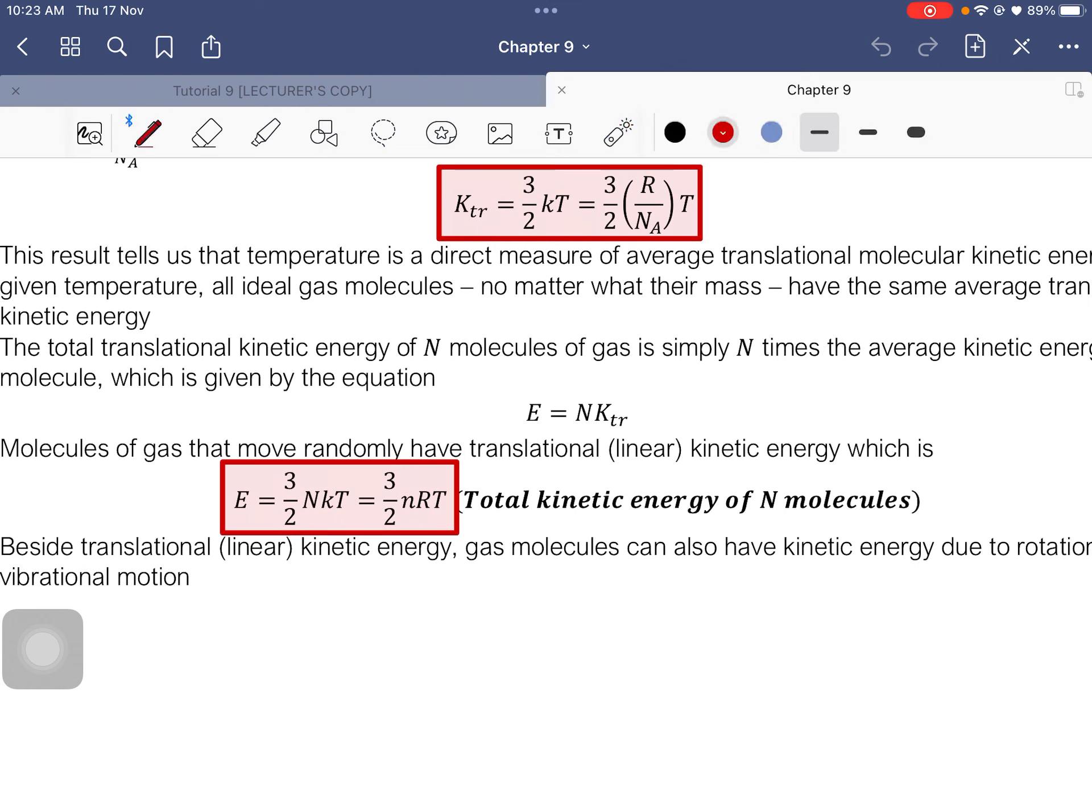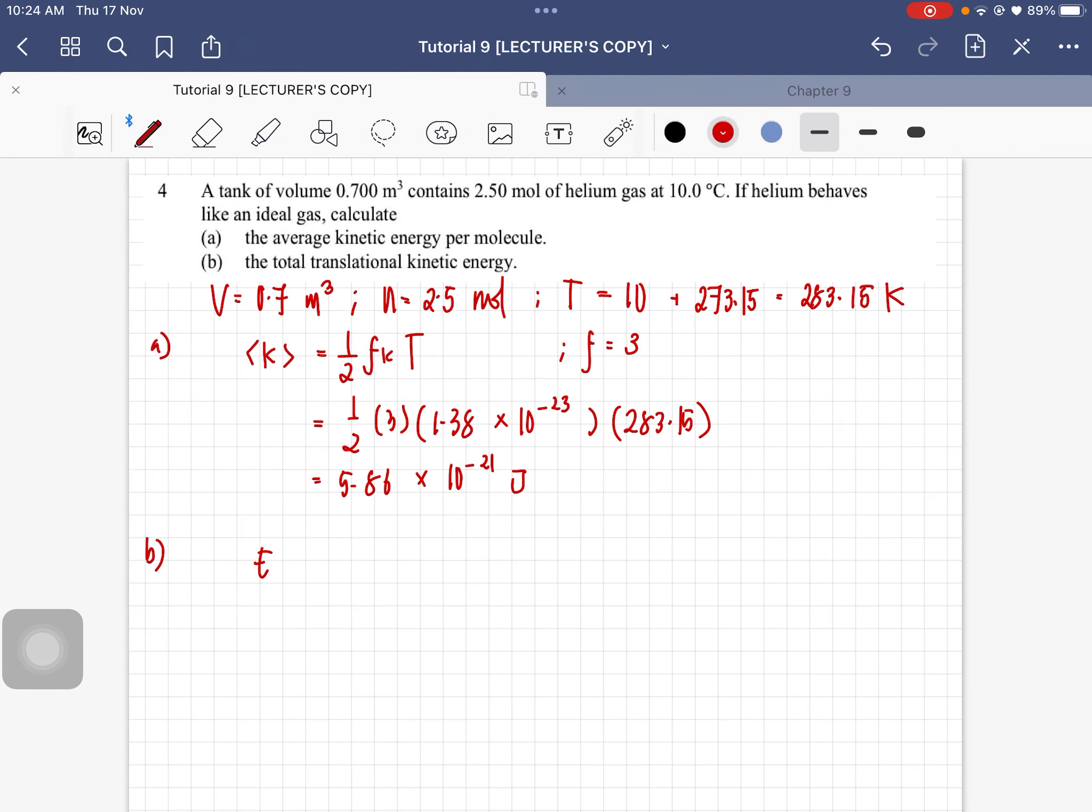It can also be written as K total. But this is based on the standardized nodes that is given by the matriculation lah. But I use E because this is based on the reference book that the nodes is based on. So just don't get it confused. It's actually the same thing lah.